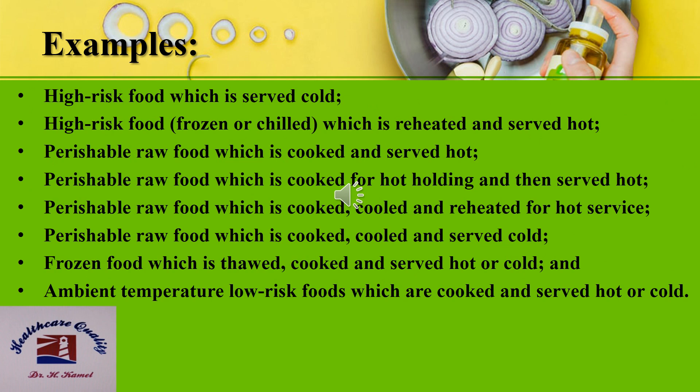Examples of product groups include: high-risk food which is served cold; high-risk food, frozen or chilled, which is reheated and served hot; perishable raw food which is cooked and served hot; perishable raw food which is cooked for hot holding and then served hot; perishable raw food which is cooled for hot serving; perishable raw food which is cooked, cooled and served cold; and frozen food which is thawed, cooked and served hot or cold.